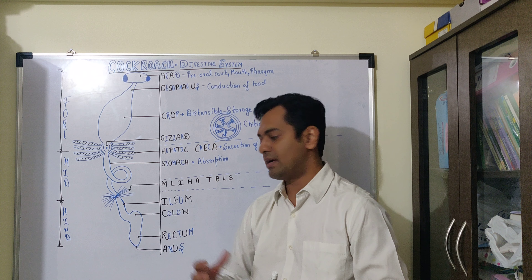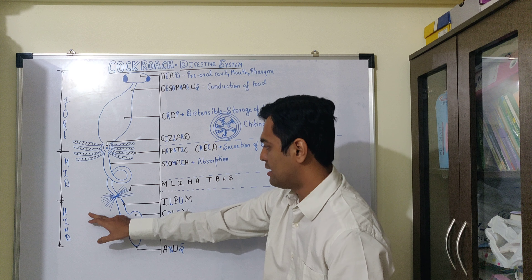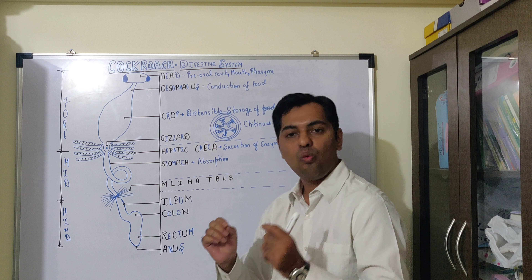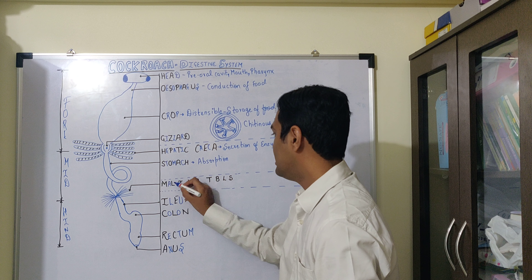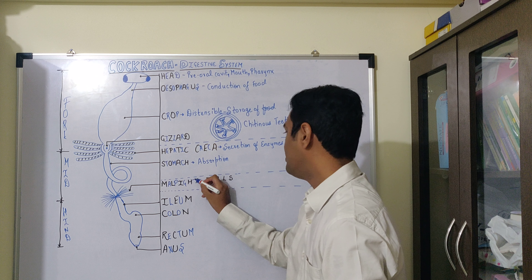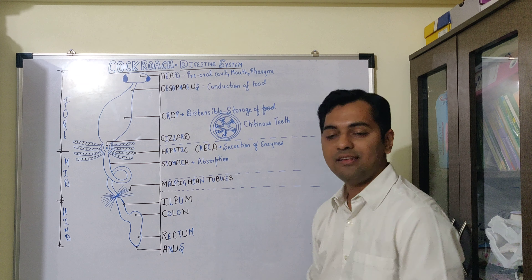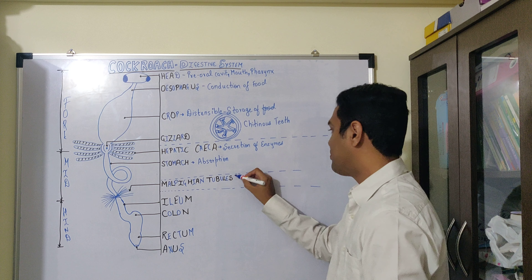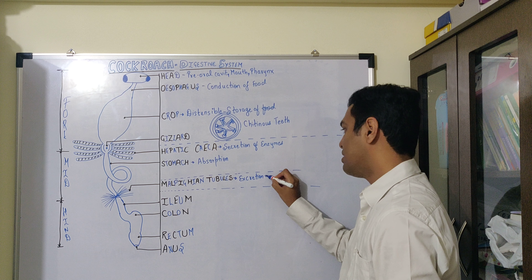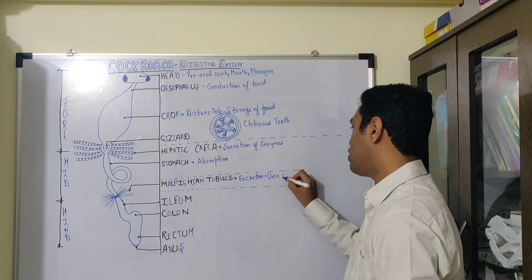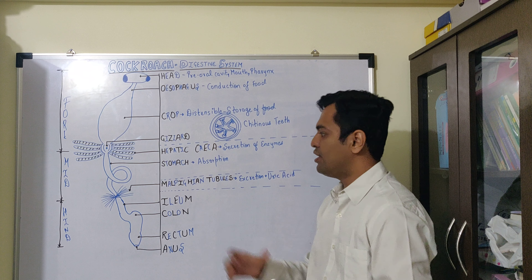At the junction of the midgut and hindgut, there is presence of 150 yellowish tubules. We call these the Malpighian tubules. These Malpighian tubules have an important role in the process of excretion. Excretion in insects mainly occurs in the form of uric acid, so this is the excretory structure in the cockroach.